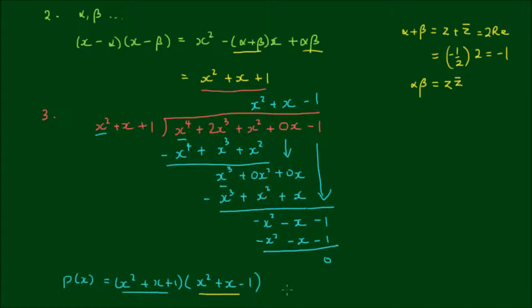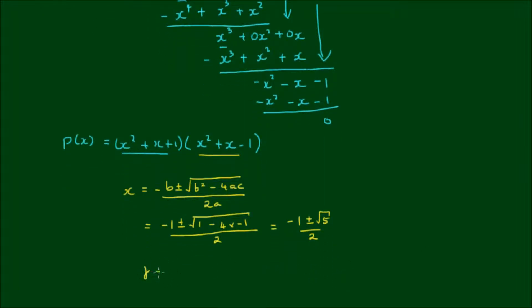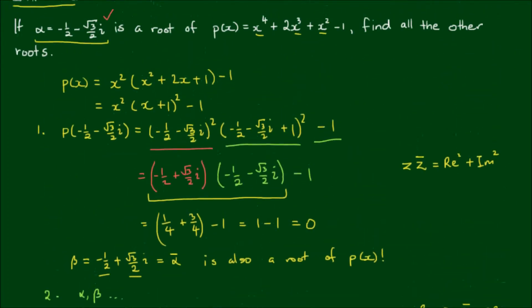So P can be expressed as (x² + x + 1) by (x² + x - 1). And we've found the factors of the first group already. Now we simply find the factors of the second group through the quadratic formula. So the quadratic formula is x = (-b ± √(b² - 4ac))/(2a). So we have (-1 ± √(1 - 4 × -1))/2. And this gives us (-1 ± √5)/2. So finally the two other roots are γ = (-1 + √5)/2. And δ = (-1 - √5)/2. And that is the end of the solution.